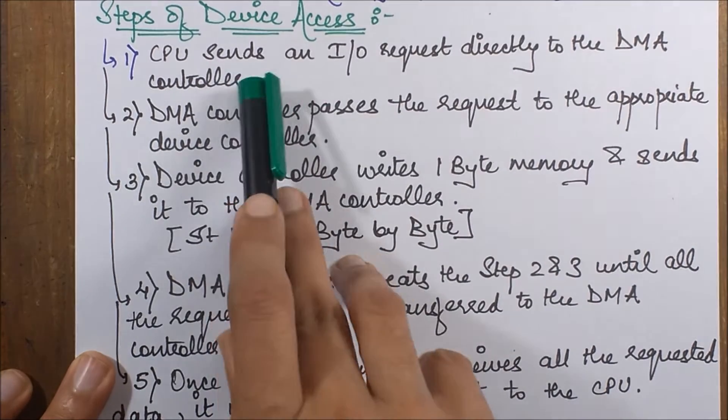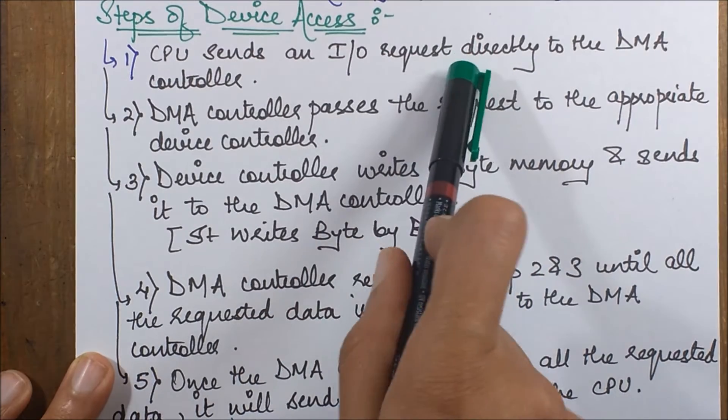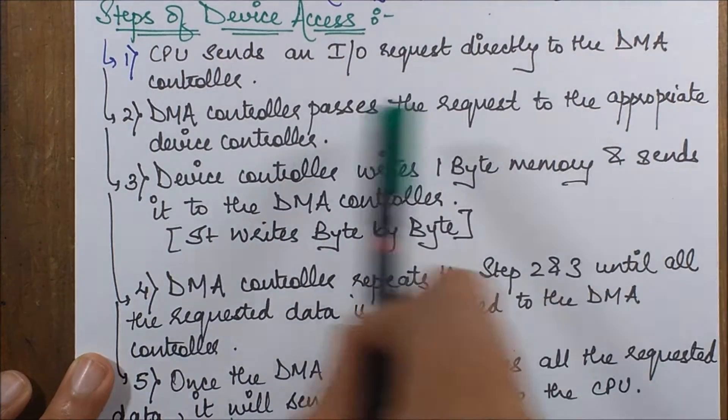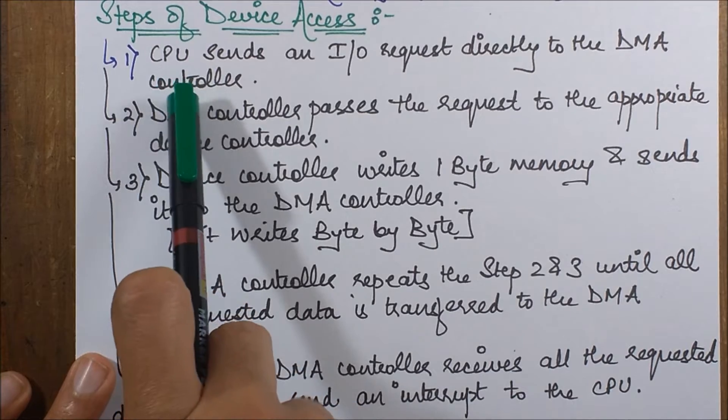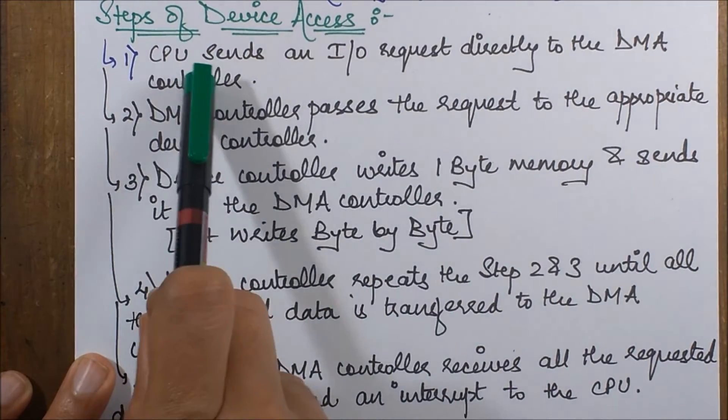Now the DMA controller passes the request to the appropriate device controller. The CPU is in need of a particular device, so it sent an I/O request to the DMA. Note that the CPU is not directly interacting with the I/O devices.